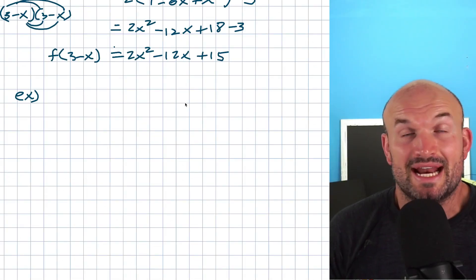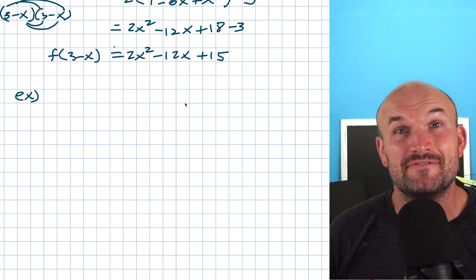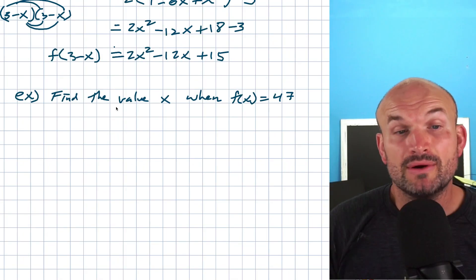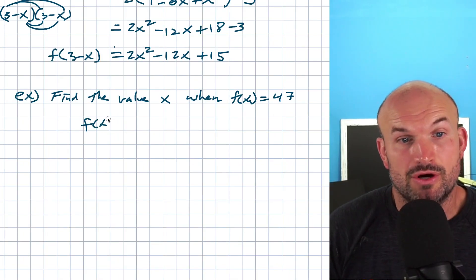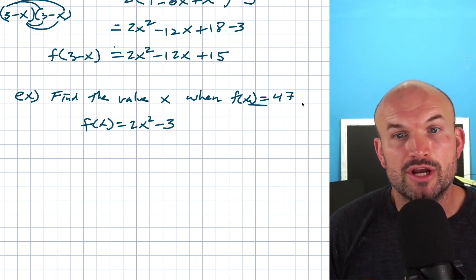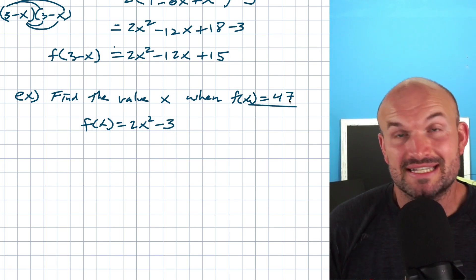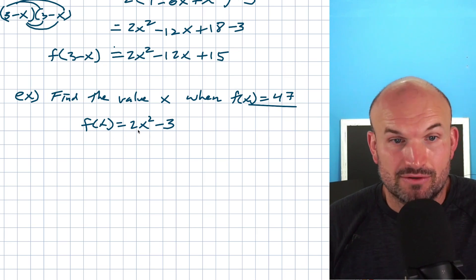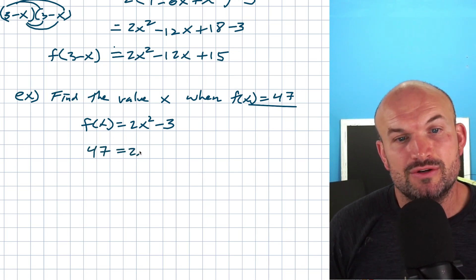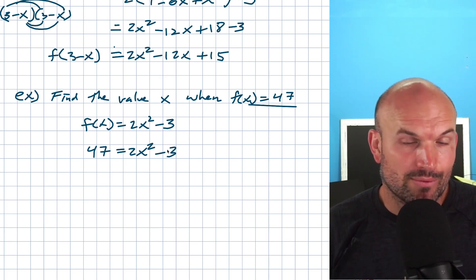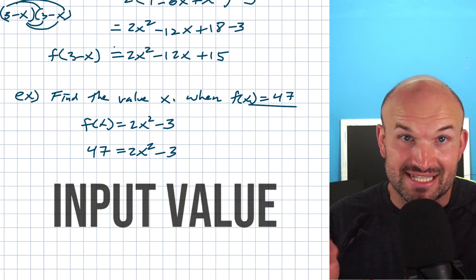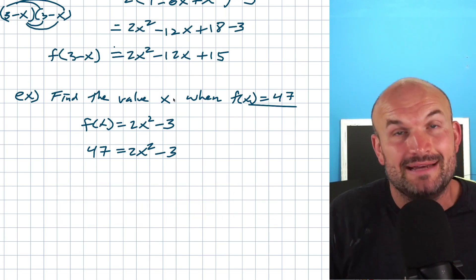Another question we could ask is: what is the value of x when f of x is equal to 47? We have our same function f of x equals 2x squared minus 3, but now we know what f of x is equal to — it equals 47 — and we don't know what x is equal to; that's what we want to find. So we set up: 47 equals 2x squared minus 3. There's a difference here between finding the input and finding the output.